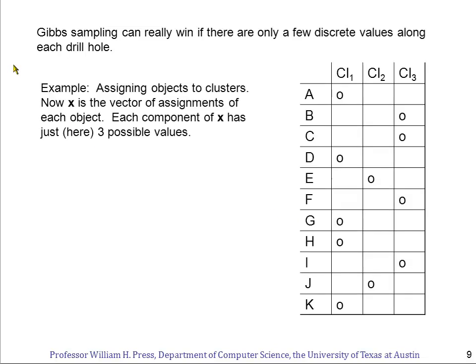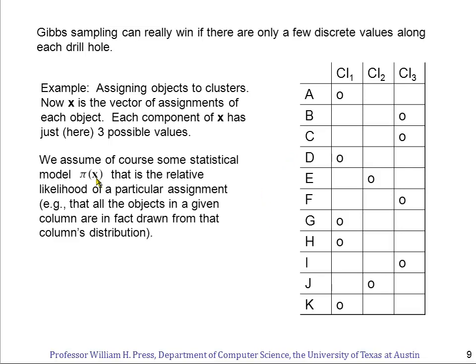Now Gibbs sampling is a real win, and in fact this is where it's mostly used, if there are only a few discrete values along each drill hole. So here's a very common example for using Gibbs sampling. Suppose the task at hand is to assign objects, here labeled A through K, to clusters, here labeled cluster 1, cluster 2, cluster 3. So each cluster can have multiple objects, but each object has to be assigned to a single cluster. We assume of course that you have some forward statistical model, pi of x, that lets you for any given assignment here compute what is the probability, or the relative likelihood, of that particular assignment. In other words, it's the probability that all the assignments are correct. And what we want to do is create a Markov chain that goes ergotically through the most likely possible assignments of all things all at once.